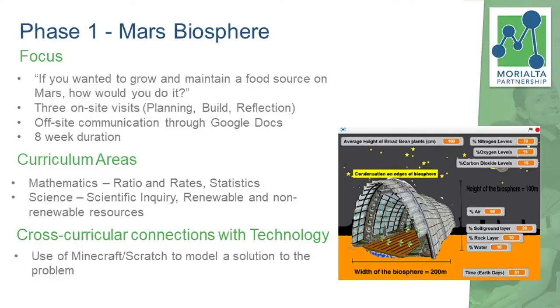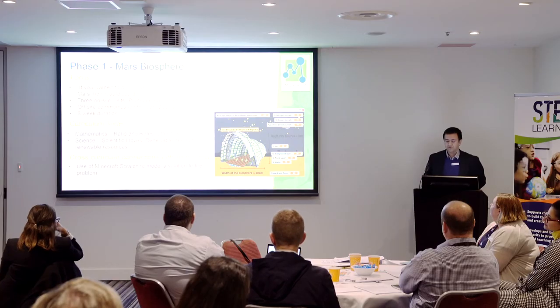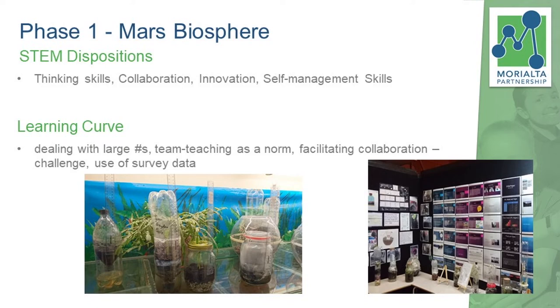The curriculum areas we were focusing on were mathematics — ratio and rates, and statistics — and science, looking at the inquiry aspect as well as renewable and non-renewable resources from the Year 7 perspective. We're working with Year 6 and 7 students from Val Park, along with the Year 8s at Normal Royal High School. We tried to link this phase of the project to run coinciding with the topics we were covering in mathematics at the time. For STEM dispositions, we actually covered them all: critical and creative thinking, collaboration, teamwork, innovation to come up with a new product, and self-managing skills such as organisation.